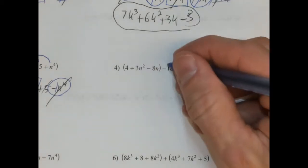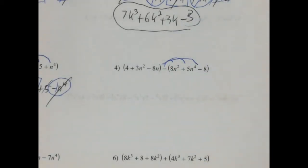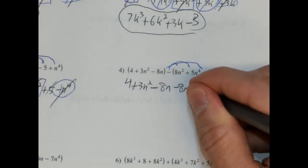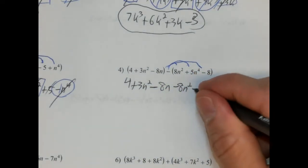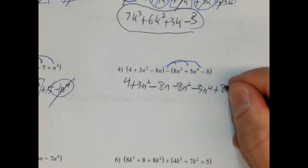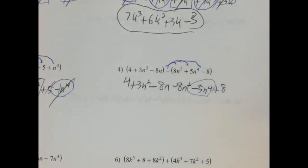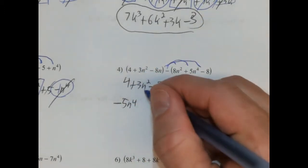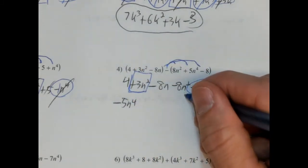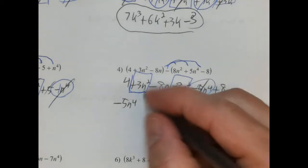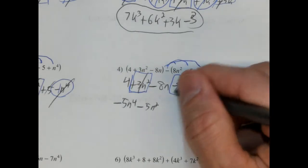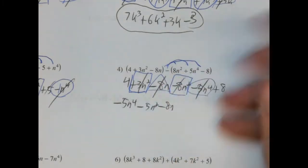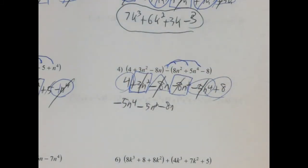Same thing here — we're going to distribute this negative sign. So we have 4 plus 3n squared minus 8n, and now this becomes negative 8n squared, this becomes negative 5n to the fourth, and this becomes positive 8. Highest exponent is the fourth power — negative 5n to the fourth, and there's no other one. No n cubed terms. We have n squared: positive 3n squared and negative 8n squared, so 3 minus 8 is negative 5n squared. And then negative 8n — there's no other term to combine — so minus 8n. And 4 plus 8 is 12, so plus 12.